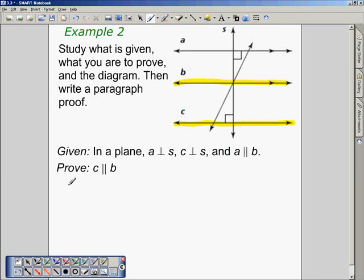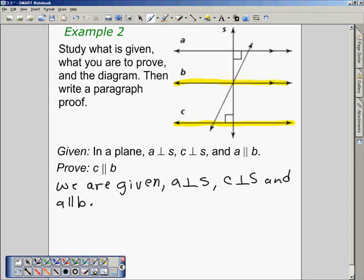First, we state our given that A is perpendicular to S, C is perpendicular to S, and A is parallel to B. We're going to start with the fact that A is perpendicular to S, and A is parallel to B.